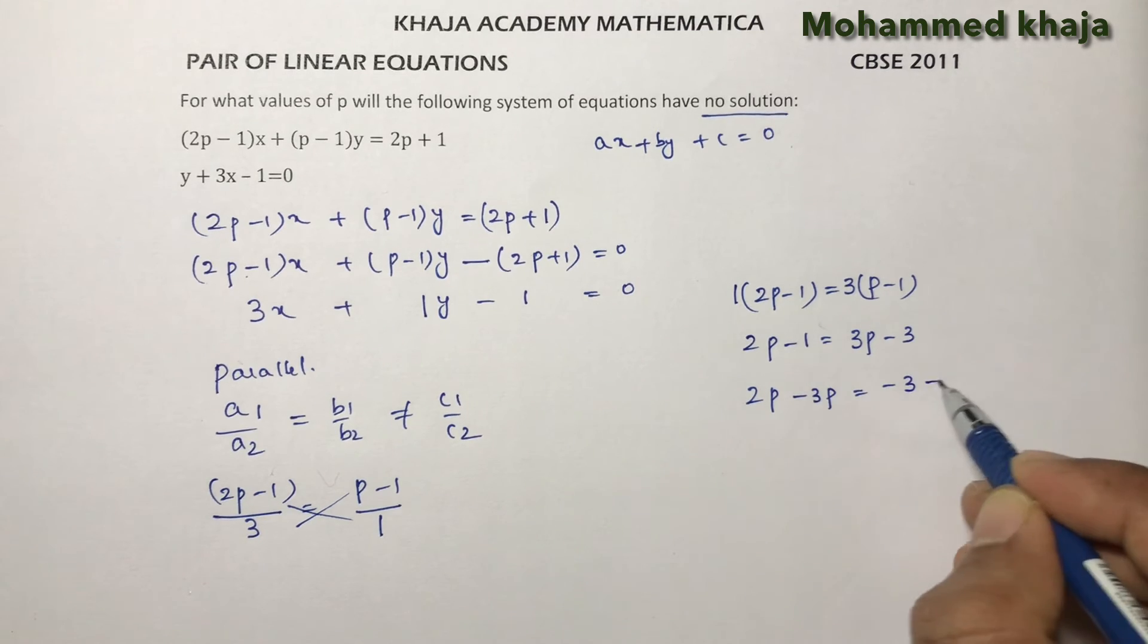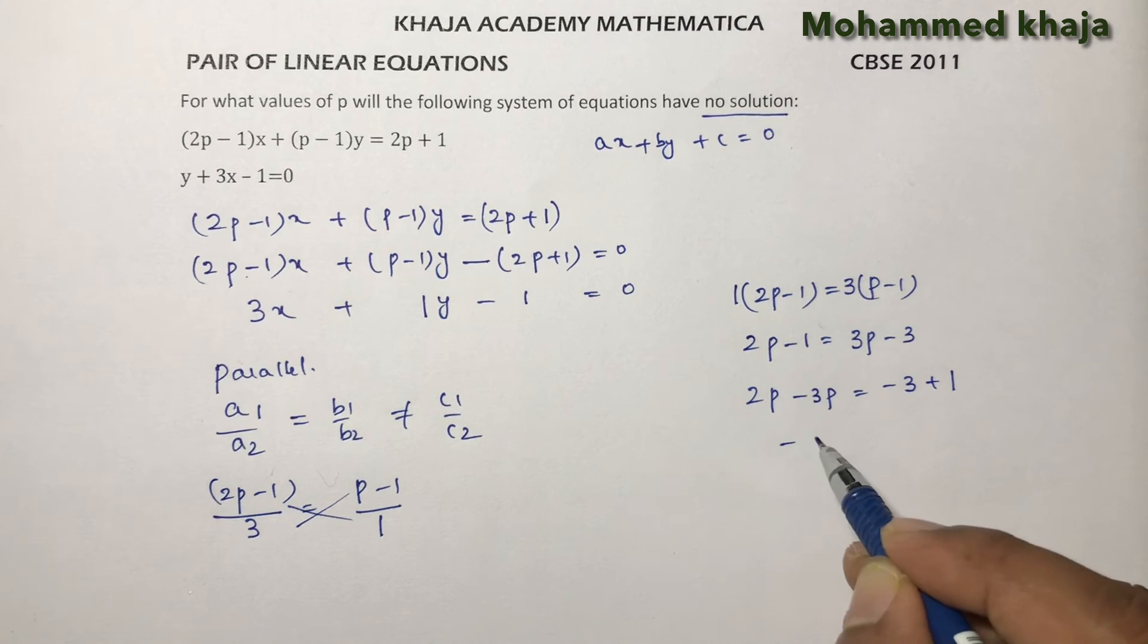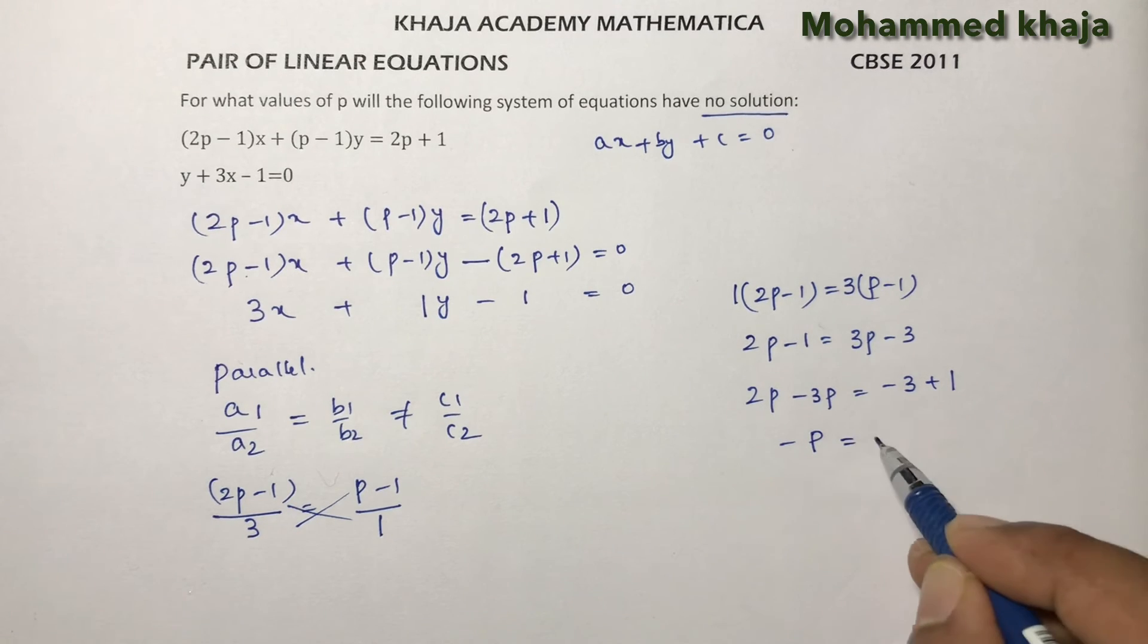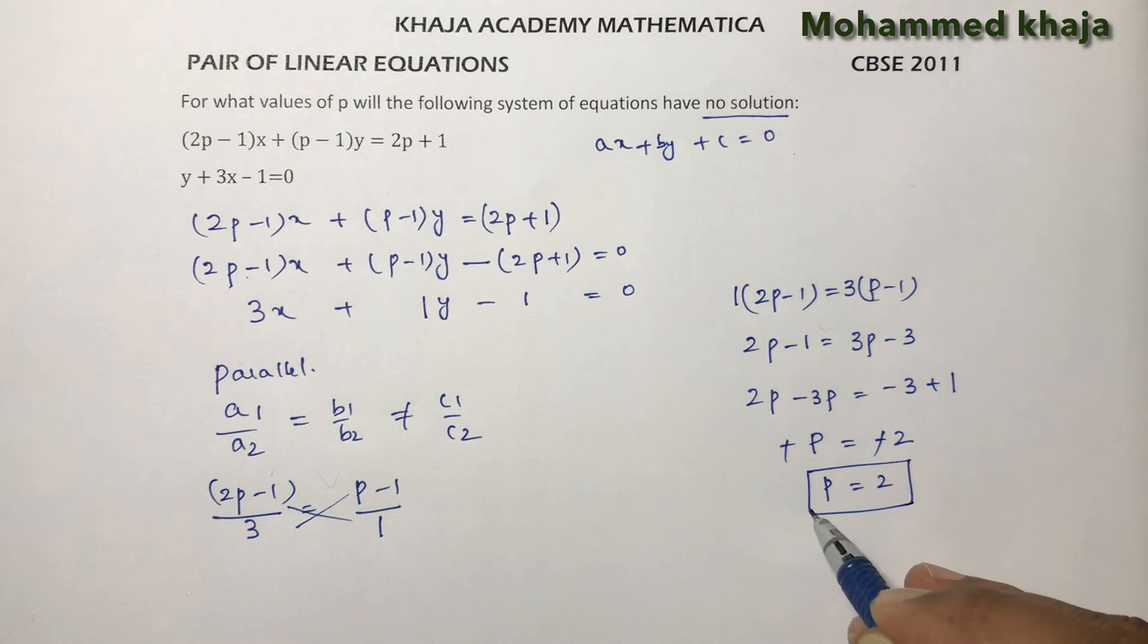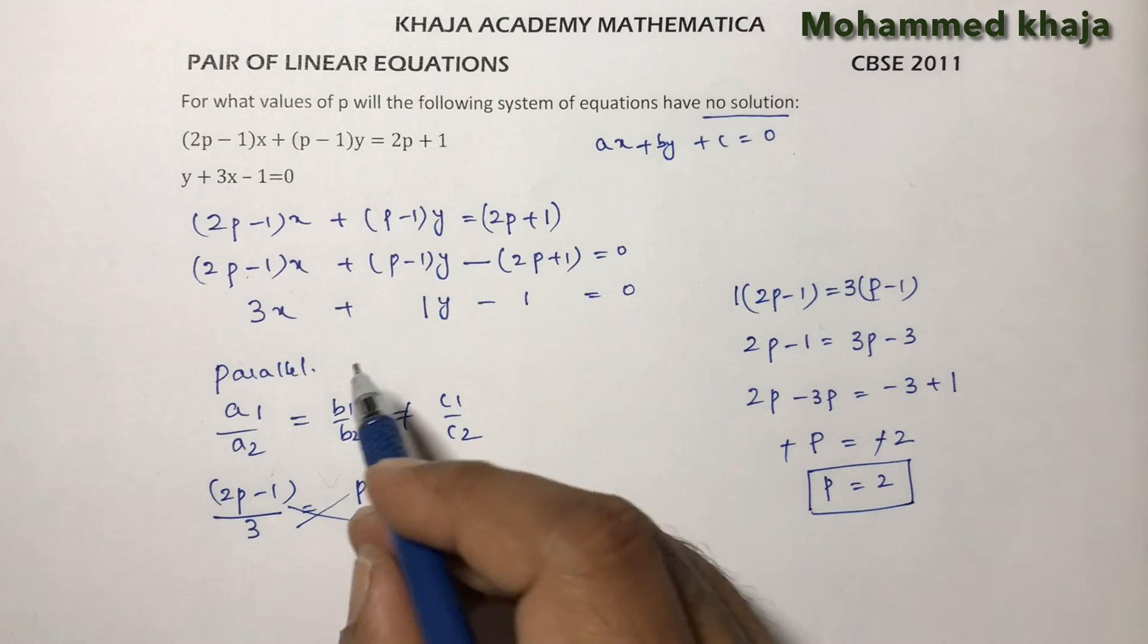So -p, 2p - 3p is -p, so -p value is -2. Minus minus cancels, therefore the value of p is 2. If the value of p is 2, the lines are parallel which have no solution.